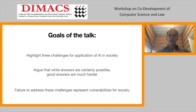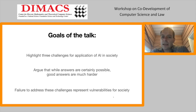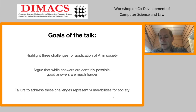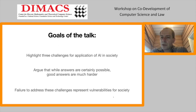The broader goal is to highlight three challenges for applications of AI in society and argue that while answers are possible, getting good and satisfying answers is a tricky long-term problem that we might want to care about from the behavioral sciences, the computer sciences, and also from legal perspectives. Failure to address these challenges would constitute vulnerabilities for society — to bad actors, but also just large-scale bad outcomes.